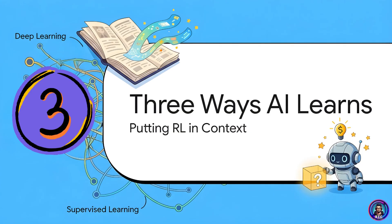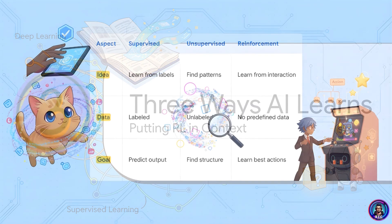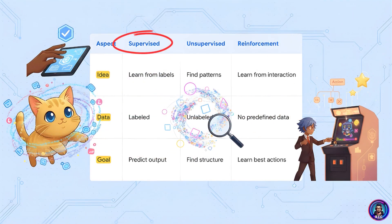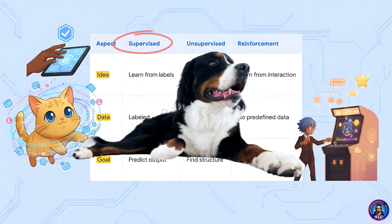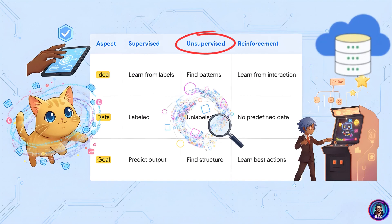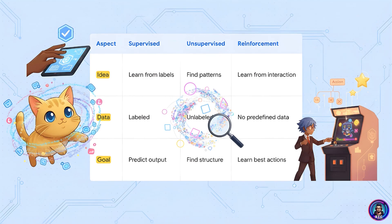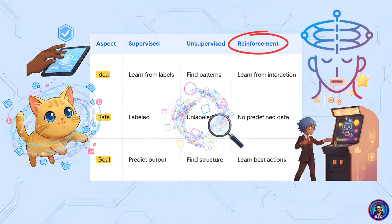Reinforcement learning is just one of three major ways we teach AI. With supervised learning, you're basically giving the AI an answer key — a massive dataset where all the correct answers are already labeled, like 'this is a cat' or 'this is a dog.' With unsupervised learning, you give it the data but no answers, and ask it to find interesting patterns on its own. Reinforcement learning is a totally different beast: there is no dataset to start with — the agent creates its own data as it goes, learning purely from the consequences of its actions.